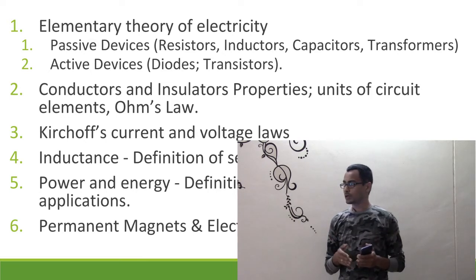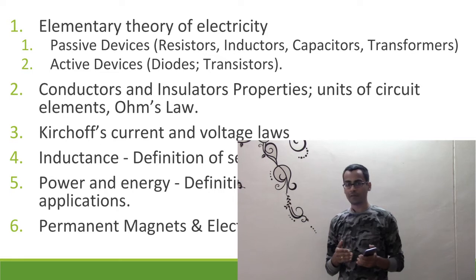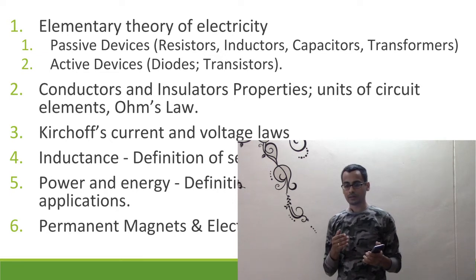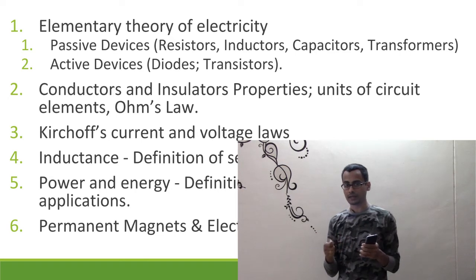Then we understand what conductors and insulators are — these are characteristics of material based on its electrical conductivity, and we get to know their uses. Then we come to the very important Ohm's law, which covers the relationship between voltage, current and resistance. In a circuit with resistance, you'll be able to find the voltage and current at different points. It's a very basic and important law.